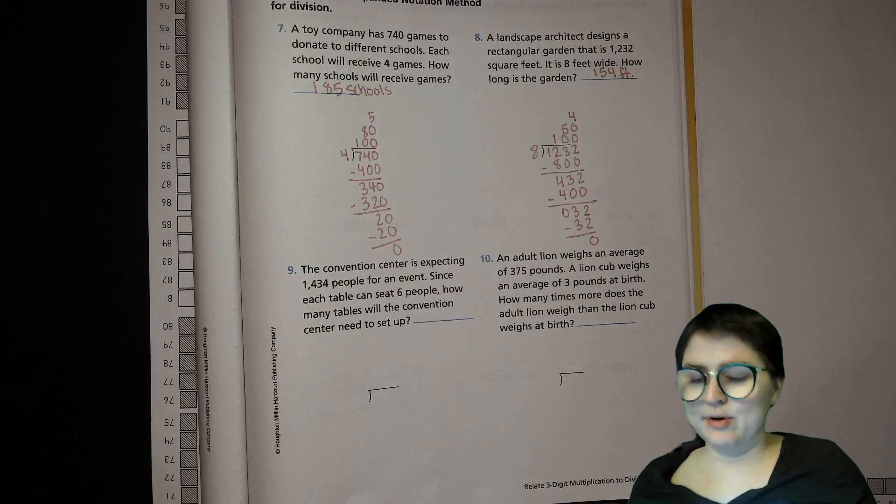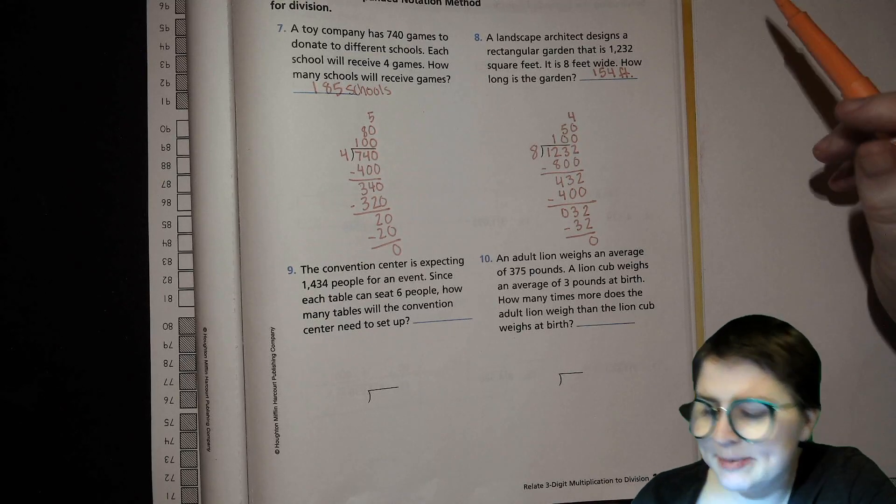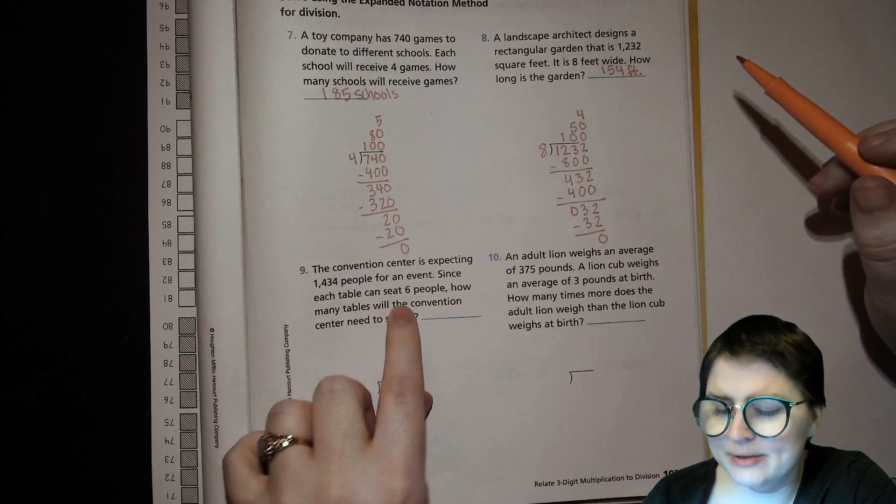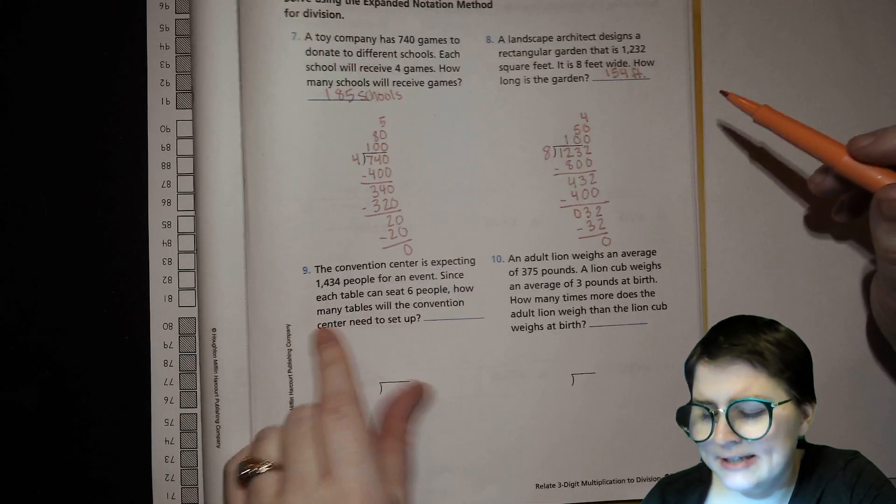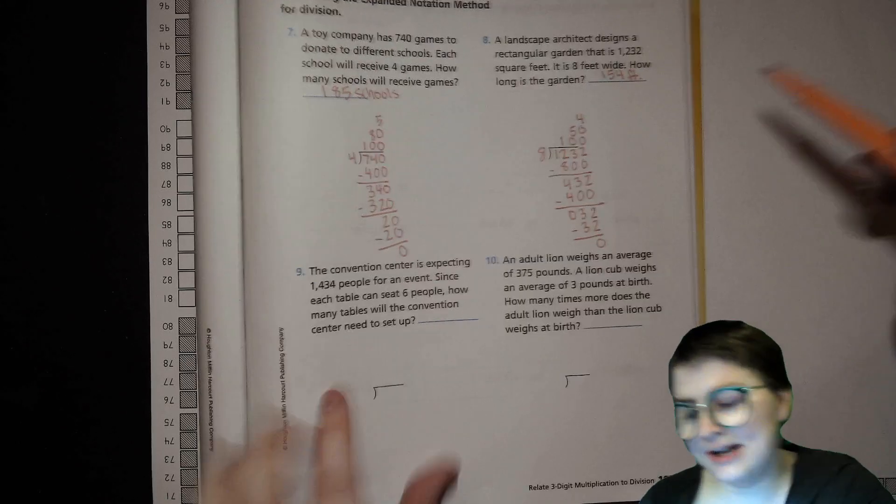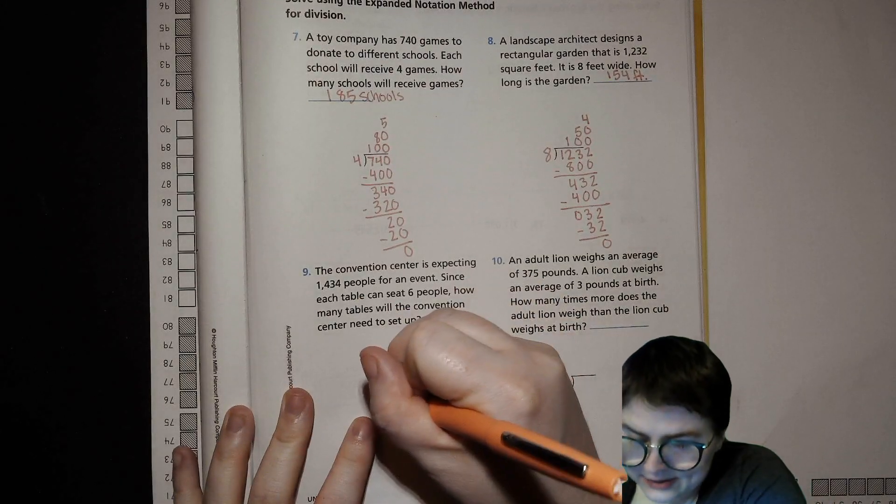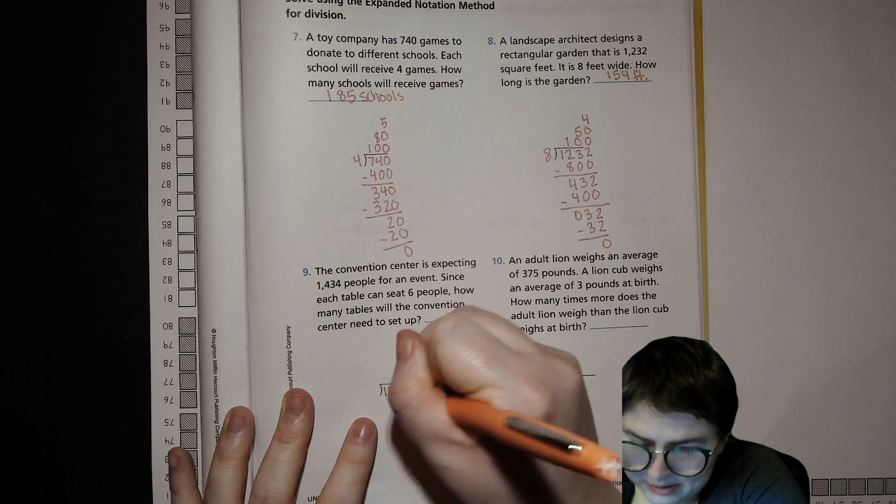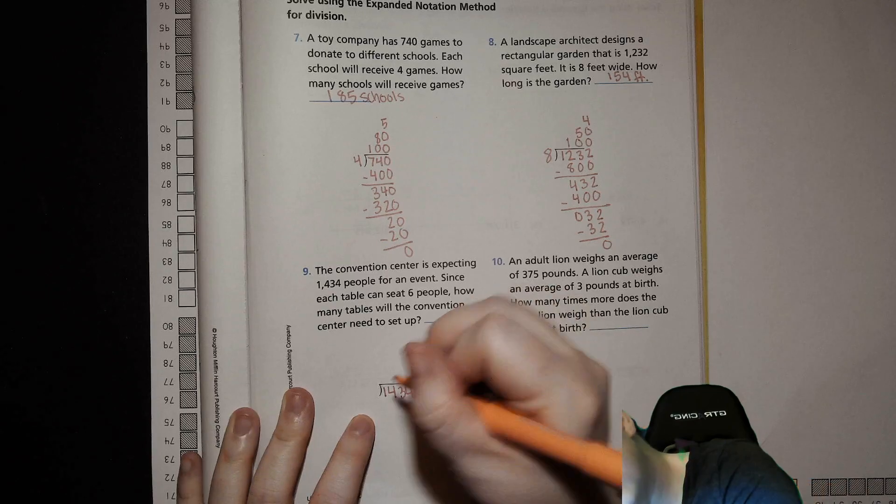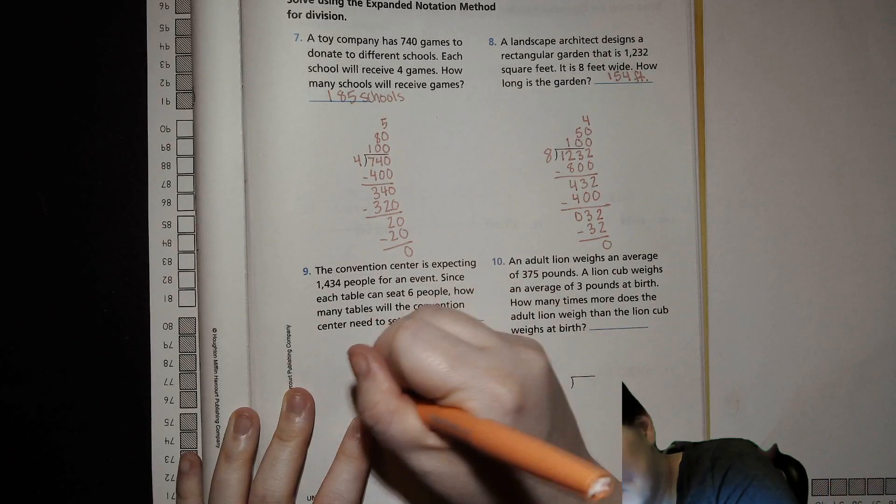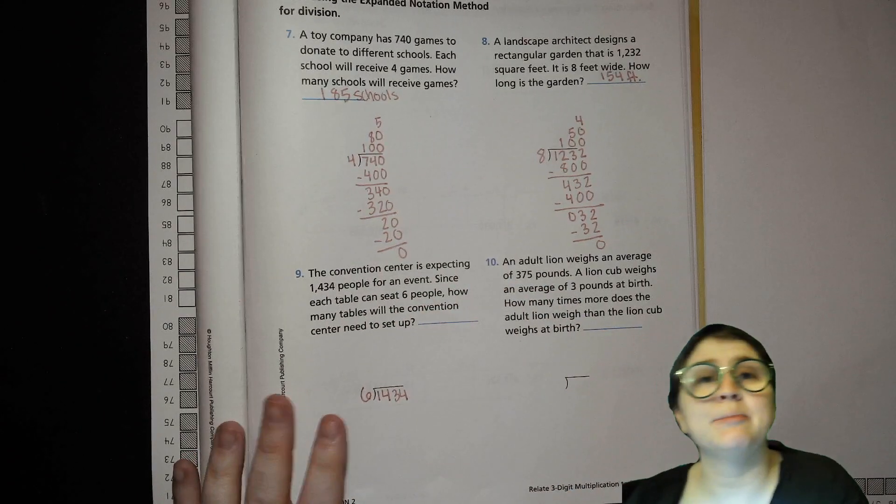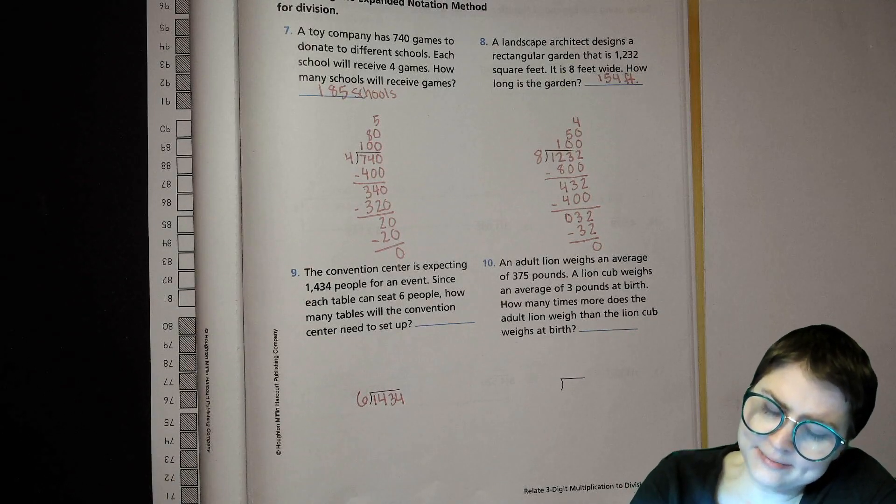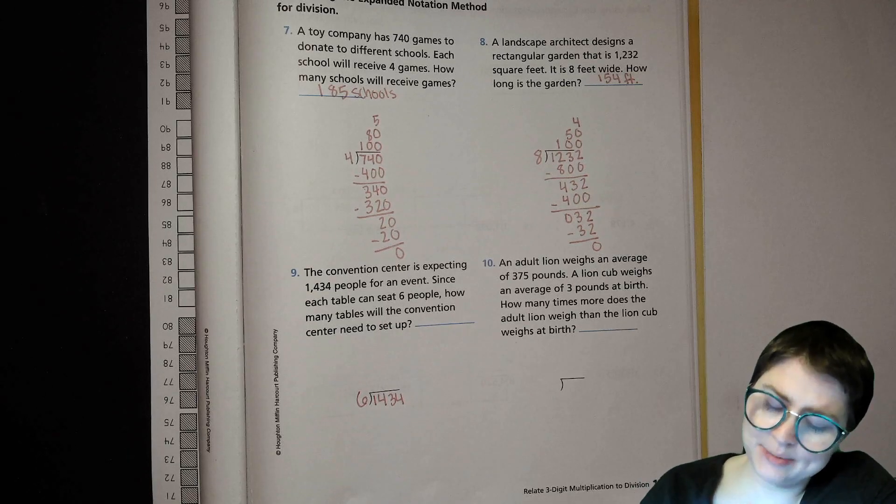Let's keep going. The convention center is expecting 1,434 people for an event. Since each table can seat 6 people, how many tables will this convention center need to set up? So our number that's getting divided is the 1,434 people. Our number of dividing, our divisor, 6. That's the number of people at each table. Now we can figure out how many tables.